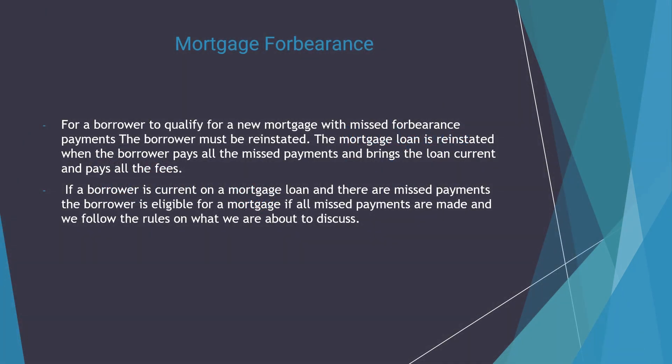For a borrower to qualify for a new mortgage with missed forbearance payments, the borrower must be reinstated. The mortgage loan is reinstated when the borrower pays all the missed payments, brings the loan current, and pays all the fees. If a borrower is current on a mortgage loan and there are missed payments, the borrower is eligible for a mortgage.